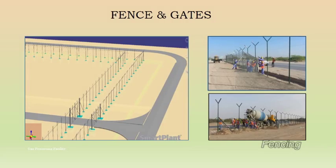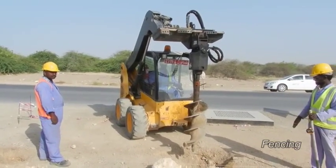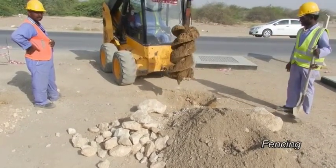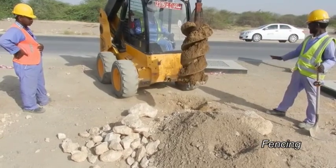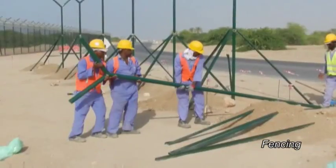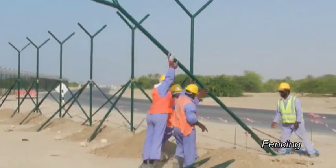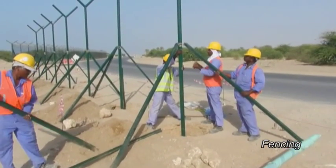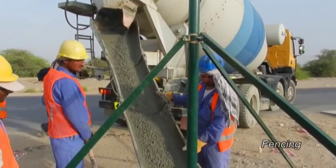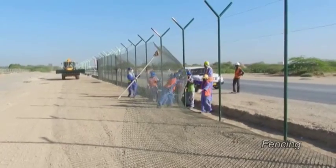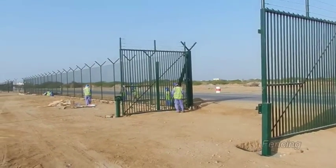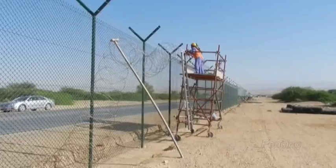Fencing. The construction sequence: set out line and level; check for existing underground services; clear and grade ground; excavation for fence post foundations; erection of posts; place in situ concrete around posts; installation of fence wire system — line wire, chain link, barbed wire, razor concertina wire; installation of gates; pour concrete ground beam.